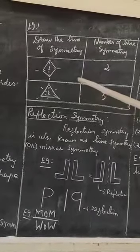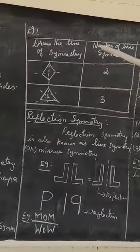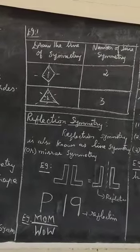See, the first one is a diamond shape. I am going to cut it into two parts. How many lines do we need to cut it? Two lines. So the number of symmetry lines is two.